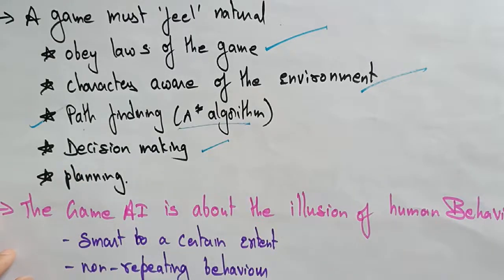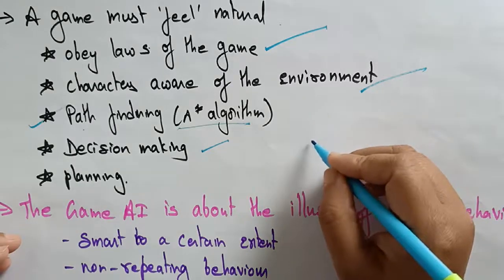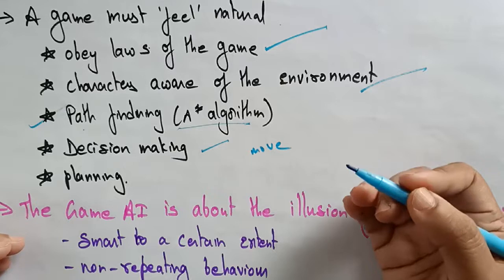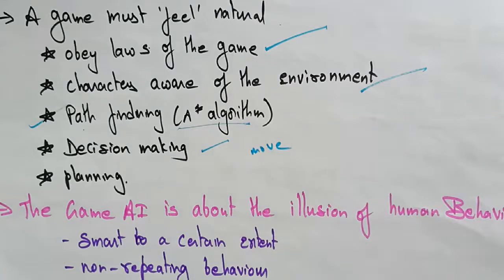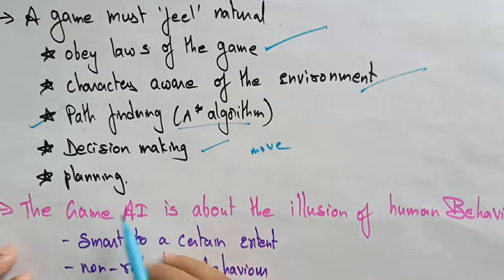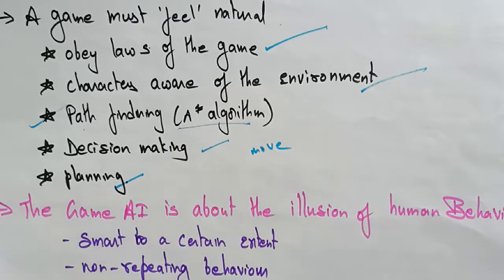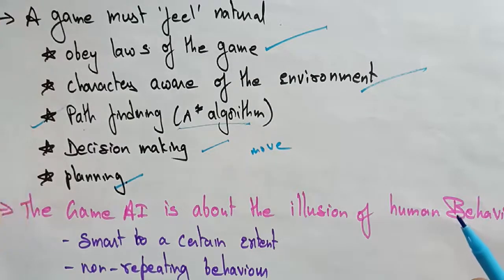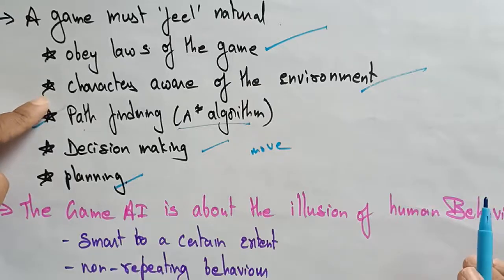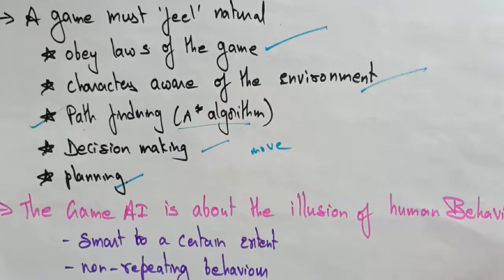Next is decision making. The AI has to build the ability of decision making — what move to do next. For example in chess, it can move the king, the queen, or the pawns. That is the decision making it has to perform. Planning is also compulsory. Just like a human, the computer and artificial intelligence involved in playing the game has to follow these rules: feel natural, obey the laws, be aware of the environment, do pathfinding, decision making, and planning.